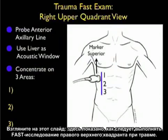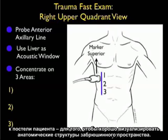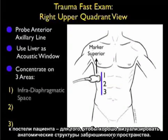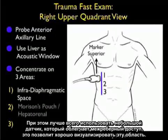Now let's take a look at a slide showing us how to perform the right upper quadrant view of the trauma fast exam. We'll want to place the probe at about the anterior axillary line, and using the liver as an acoustic window, aiming the probe down towards the bedside retroperitoneally to get a good view of these anatomical structures. It's best to have a small footprint probe that can easily sit between the ribs, giving a good view onto this area.